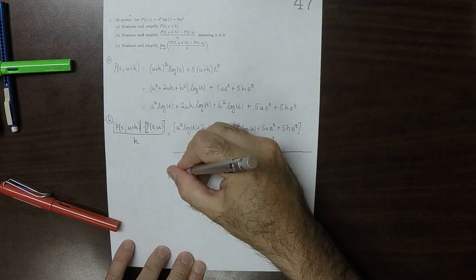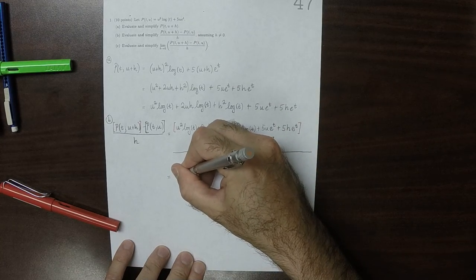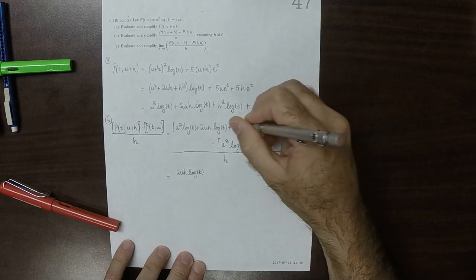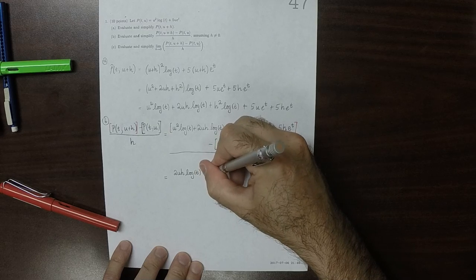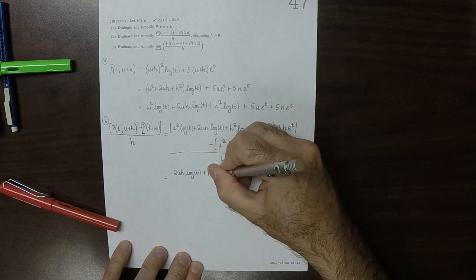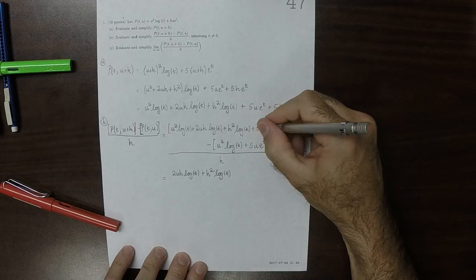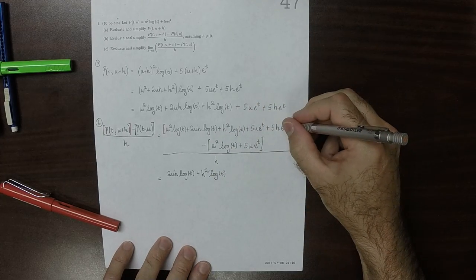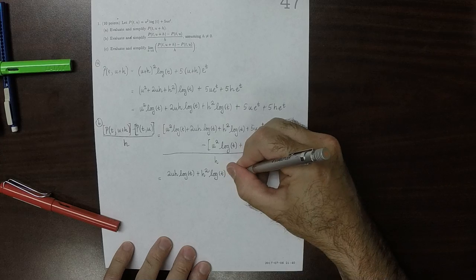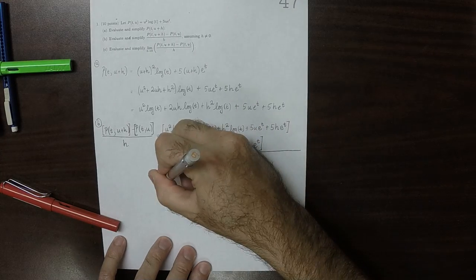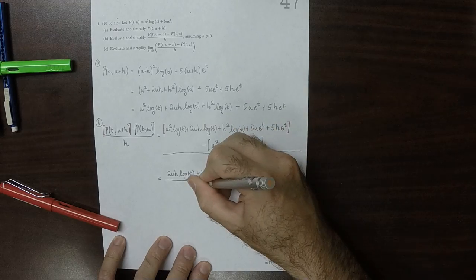And we'll be left with 2uh log t plus h squared log t plus 5h exponential t over h.